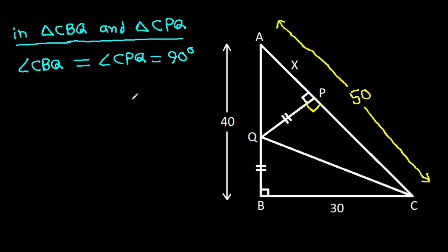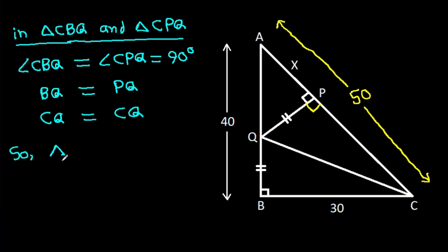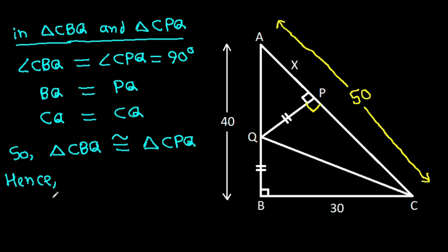And BQ is equal to QP, and CQ is common. So, triangle CBQ is congruent to triangle CPQ. Hence, CB equals CP, and CBQ is 30, so CPQ is 30.